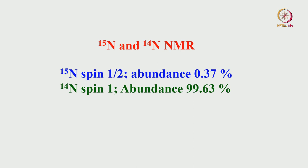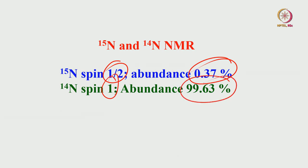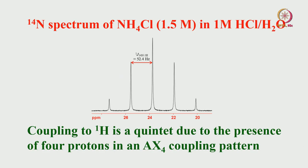We will start today with nitrogen-15 NMR and nitrogen-14 NMR. Nitrogen-15 is a spin-half nucleus with an abundance of 0.37 percent. Nitrogen-14 is spin-1 with a large natural abundance of 99.63 percent. Nitrogen-14 is a quadrupolar nucleus, so very rarely do we get sharp peaks, but we will see what to do.